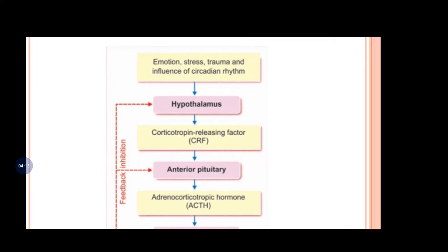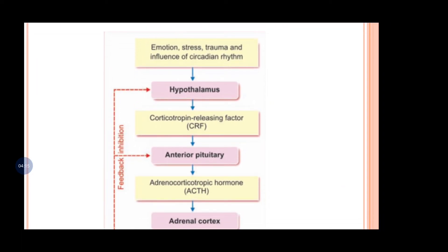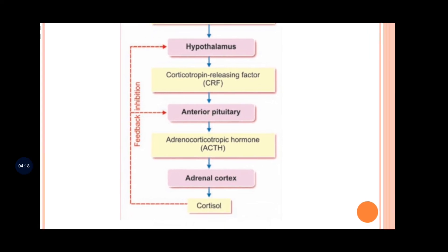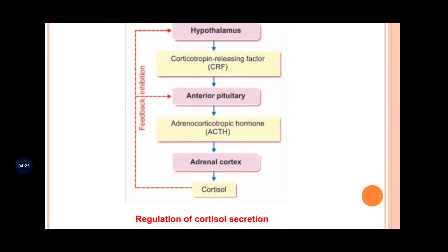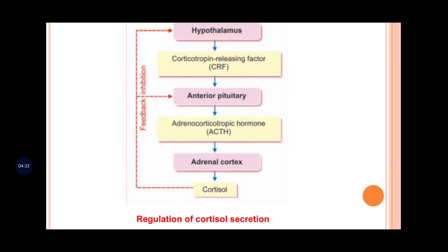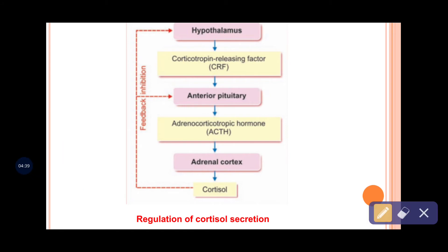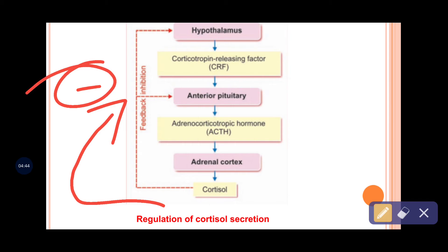Regarding regulation, any kind of excess emotion, stress, or trauma affects the hypothalamus, which releases corticotropin-releasing factor (CRF). This affects the anterior pituitary, which releases ACTH — adrenocorticotropic hormone — which then stimulates the adrenal cortex to release cortisol. Cortisol exerts a negative feedback inhibition on both the anterior pituitary and the hypothalamus.